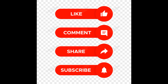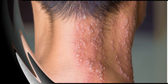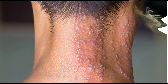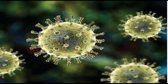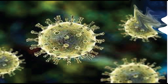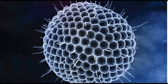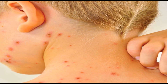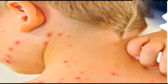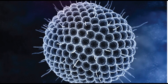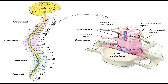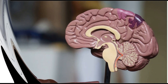Herpes zoster infection is also called shingles. It is a viral infection caused by the virus called the varicella zoster virus. This is a herpes virus — the same one that causes chicken pox. After a person has had chicken pox, the virus remains dormant in the nerve tissues near the spinal cord and the brain.